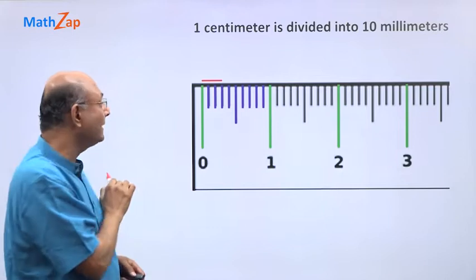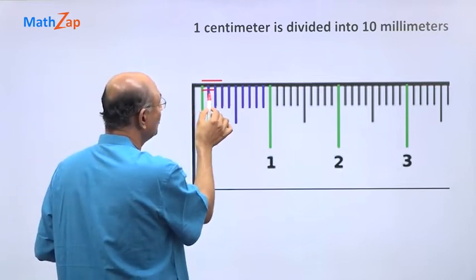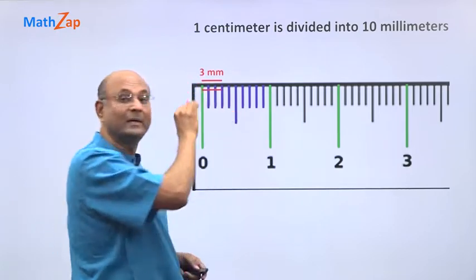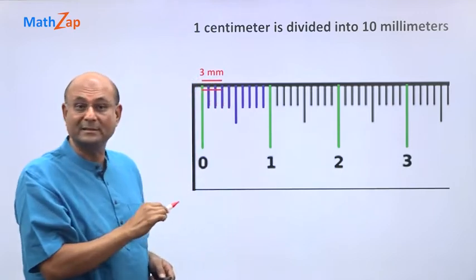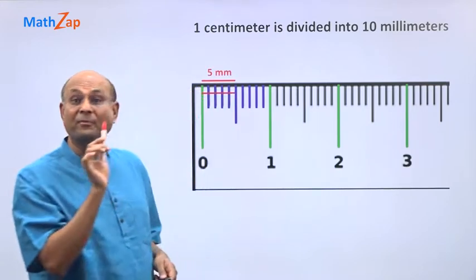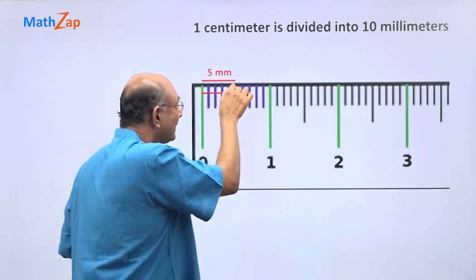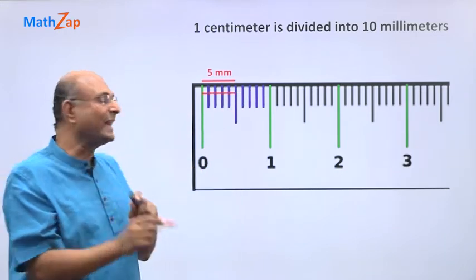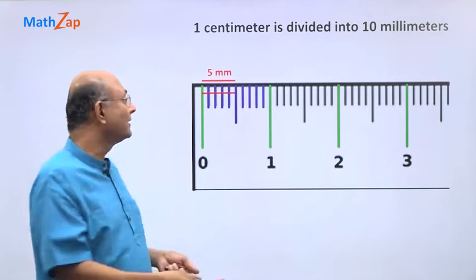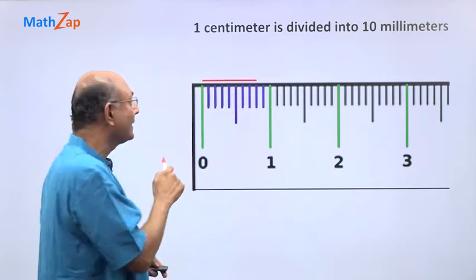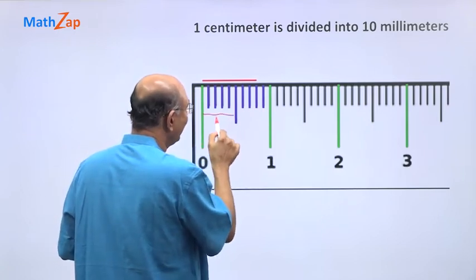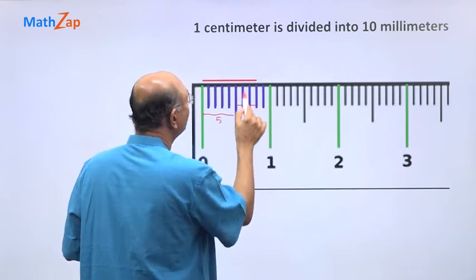So what is the length of this small line? It has 1, 2, 3 gaps, so it is 3 millimeters — it started at 0 and ended at the third marking. What about this line? It has 1, 2, 3, 4, 5 gaps, so it is 5 millimeters. Notice that at the 5 millimeter point there is a slightly longer mark, so you can easily identify it. From there, counting on: 6, 7, 8 — that is 8 millimeters.